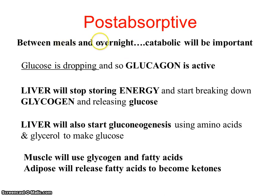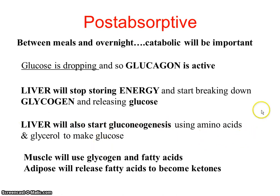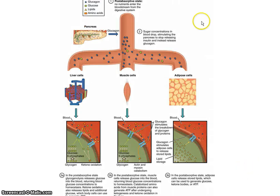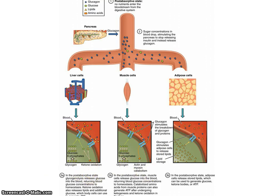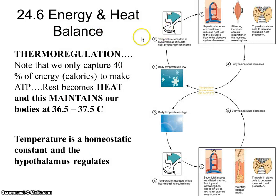In the post-absorptive state — between meals and overnight when you're not eating — catabolic reactions become very important. Glucose is dropping, so glucagon becomes active. The liver stops storing energy and starts breaking down glycogen to release glucose, and also begins gluconeogenesis using amino acids and glycerol. Muscle uses glycogen and fatty acids for fuel, and adipose releases fatty acids that become ketones. In this state, glycogen breakdown and ketone oxidation increase.